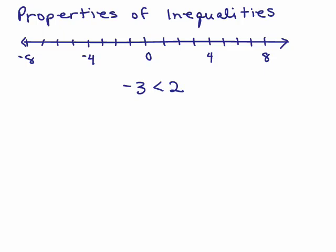Let's go over the properties of inequalities. This means we're dealing with the less than and greater than symbols, as opposed to equations which only have an equal sign. If we look at a number line, the symbol less than means the left side has to be a smaller number and the right side a bigger number. So negative 3 is less than 2.